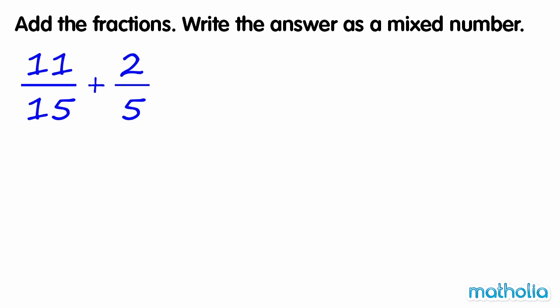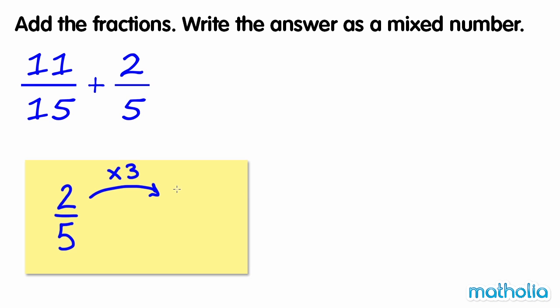Add the fractions. Write the answer as a mixed number. We need to add eleven-fifteenths and two-fifths. The denominators of these fractions are not the same — they are unlike fractions. In order to add the fractions, we need to make their denominators the same. Let's find an equivalent fraction of two-fifths where the denominator is fifteen. Two-fifths is equal to six-fifteenths. Six-fifteenths is an equivalent fraction of two-fifths.